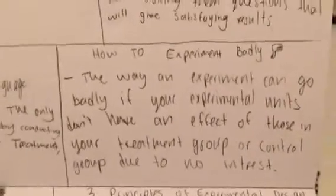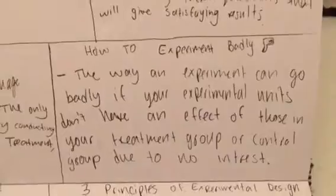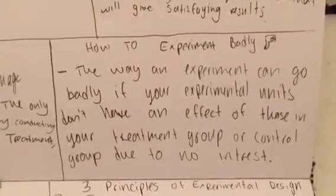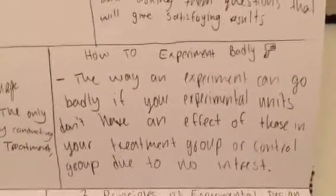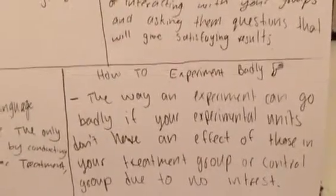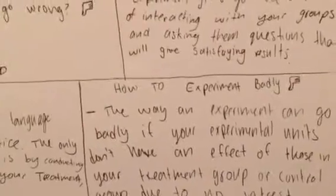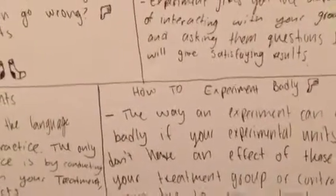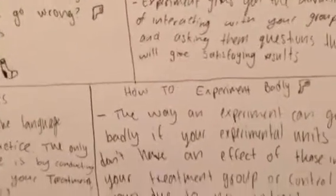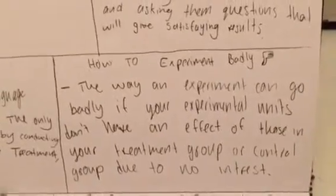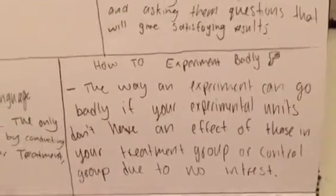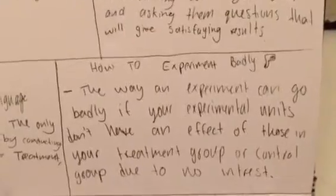How to experiment badly: an experiment can go badly if your experimental units don't have an effect in your treatment group or control group due to no interest. For example, if you conduct an experiment about who likes chocolate ice cream better than vanilla ice cream, and you're in a classroom and you don't randomly choose participants and just go in and ask them, that could be a bad experiment — because you want an honest, randomized experiment.